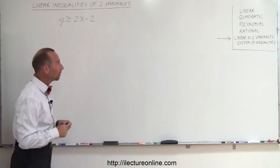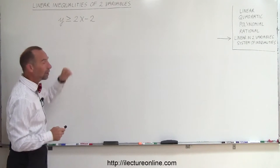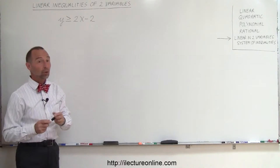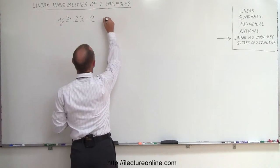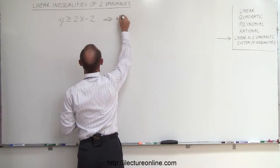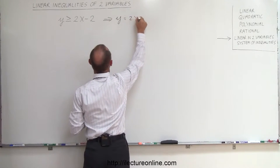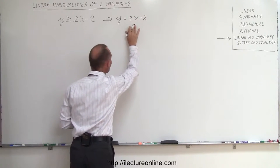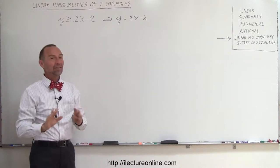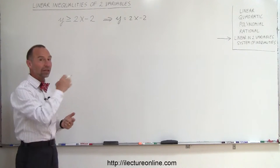So how do we solve for that? The easiest thing to do is to take this inequality and first turn it into an equation. Change the inequality symbol into an equation symbol, so we write y equals 2x minus 2. Of course, this is not equal to the original. This is an equation, that's an inequality, they're not the same thing, but it helps you solve the inequality.